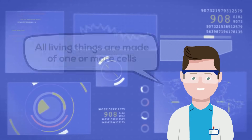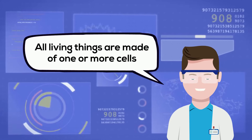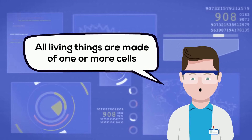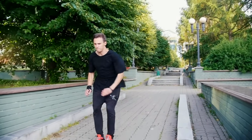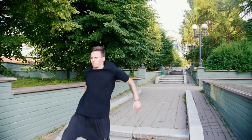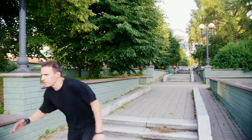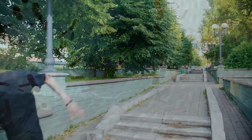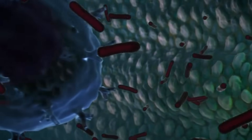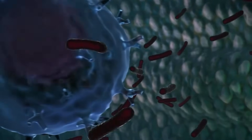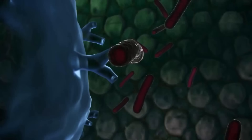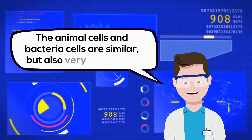Modern cell theory states that all living things are made of cells. For example, the human body is made up of trillions of cells working together to keep you alive. At the same time, there are trillions of individual cells inside of you working together to stay alive. Although these cells are similar in some ways, they're also very different.